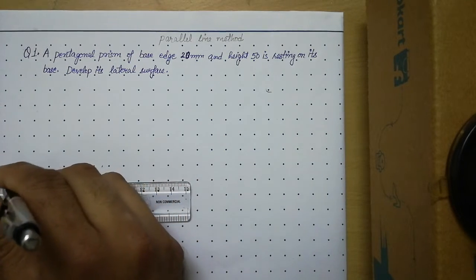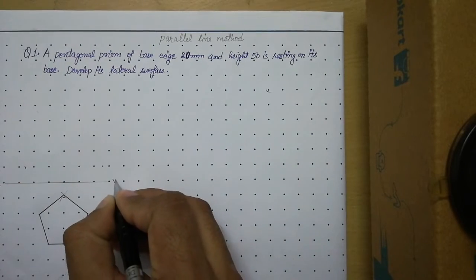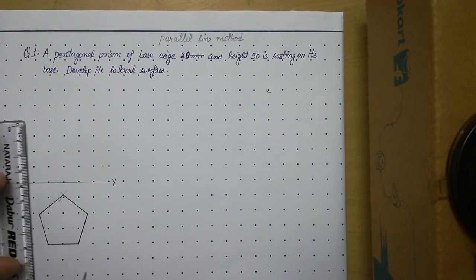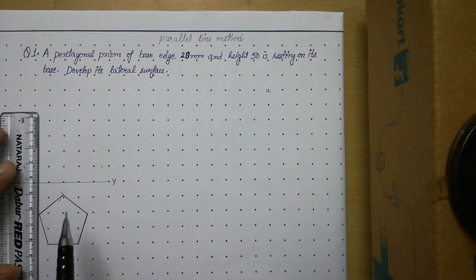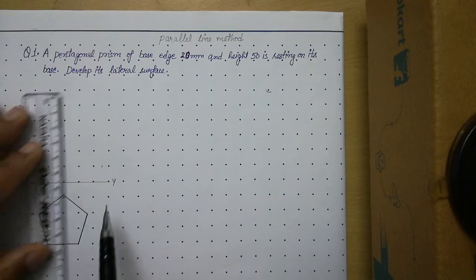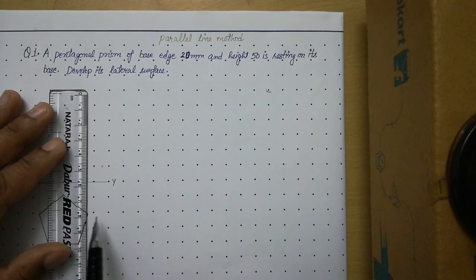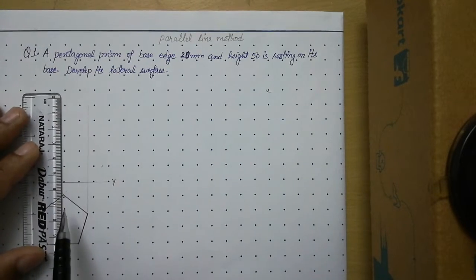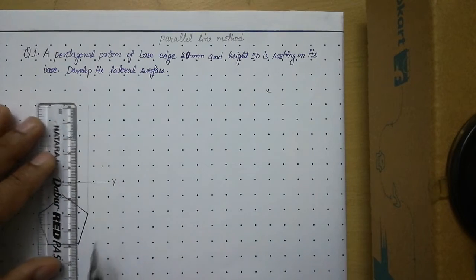After drawing the top view of the solid, draw the XY line because we are solving in first angle projection. Call this X and Y. Then from all the points of the pentagon, take vertical projectors to draw the front view. Remember these projectors must be very thin.